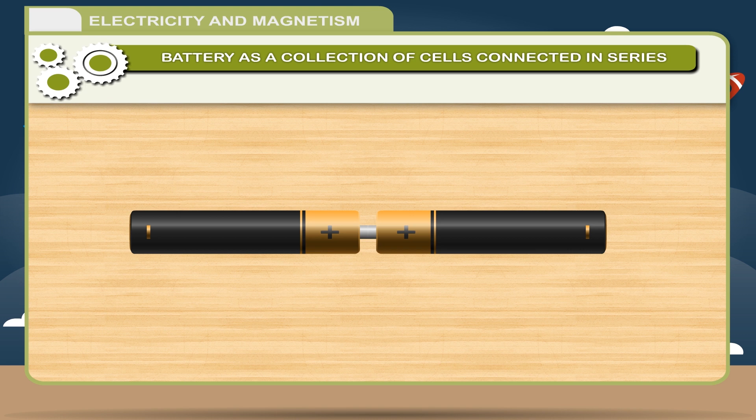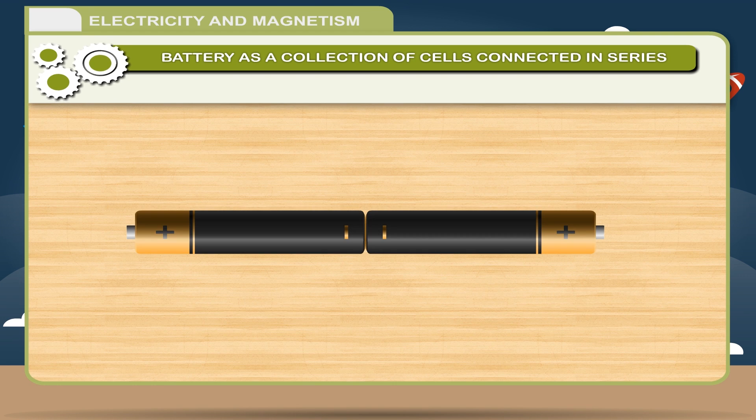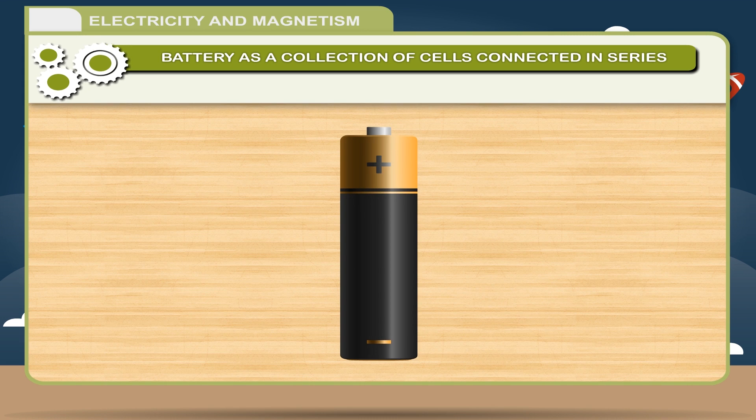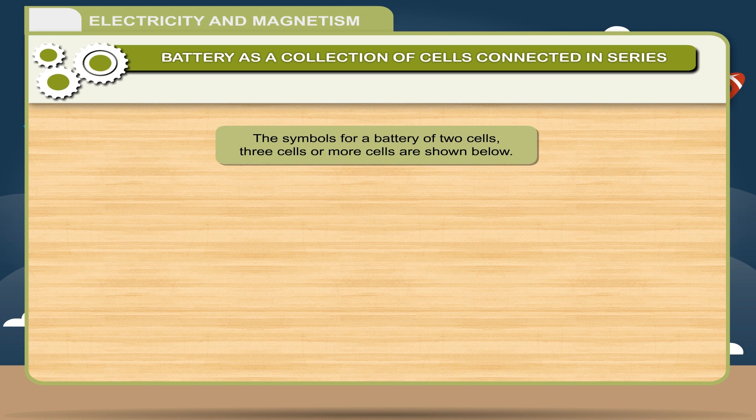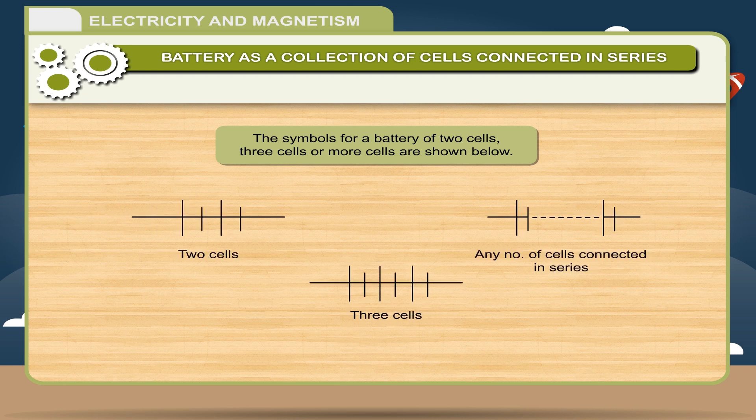If you connect cells with two positive terminals touching, the circuit will not work. In the same way a battery will not work if you connect two negative terminals together. Battery usually have positive and negative symbols printed on their compartments to ease identification. The symbols for a battery of two cells, three cells or more cells are shown below.